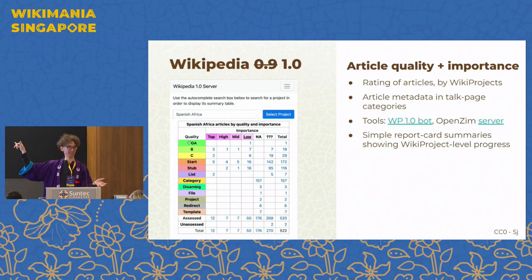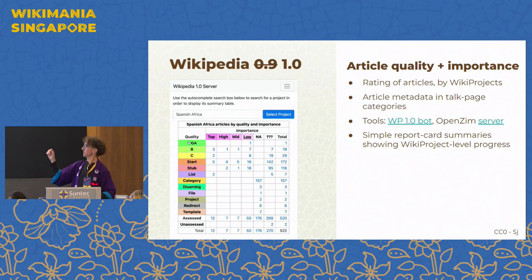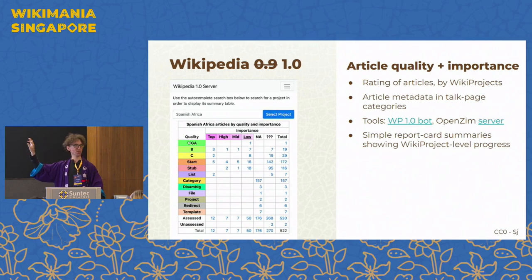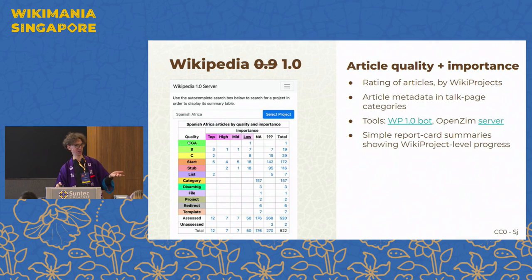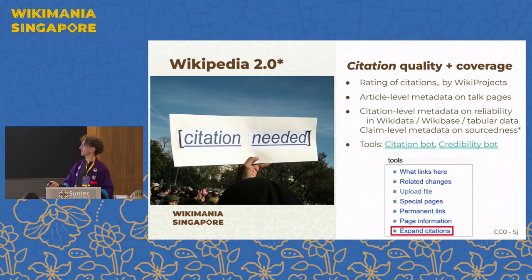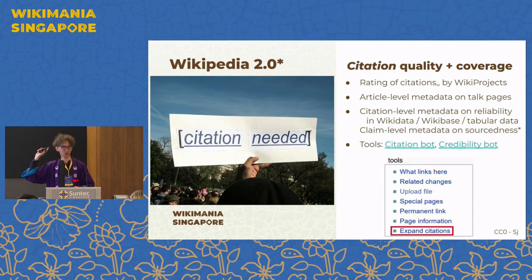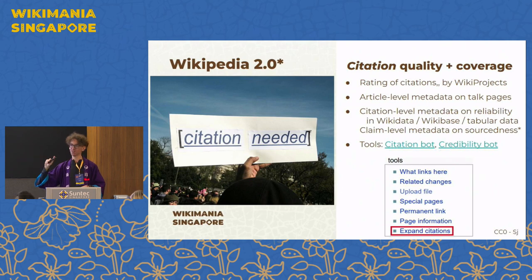You could take the slice of articles above some threshold of quality and importance and make a snapshot. In the end, some initiatives use this explicitly as how they decided what to distribute in different contexts. Nice things about this are it's very low-key, very lightweight, most people don't notice it, and it doesn't really need any elaborate data structures — you're just adding categories to talk pages. So what do we do after Wikipedia 1.0? Citations.